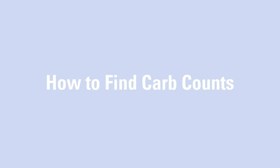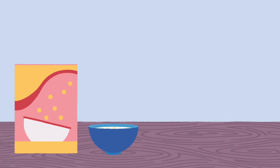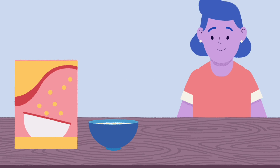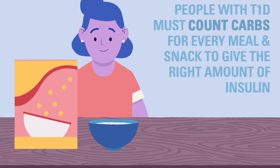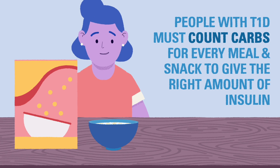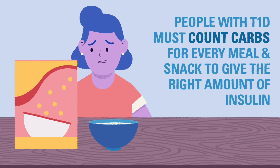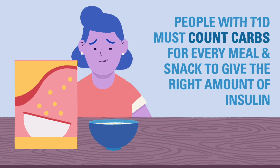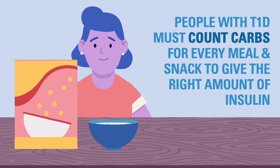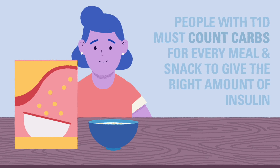People living with type 1 diabetes must count the carbohydrates in every meal and snack so they can give the right amount of insulin to help control blood glucose. This video will guide you on how to find the carbohydrate content of a meal or snack.